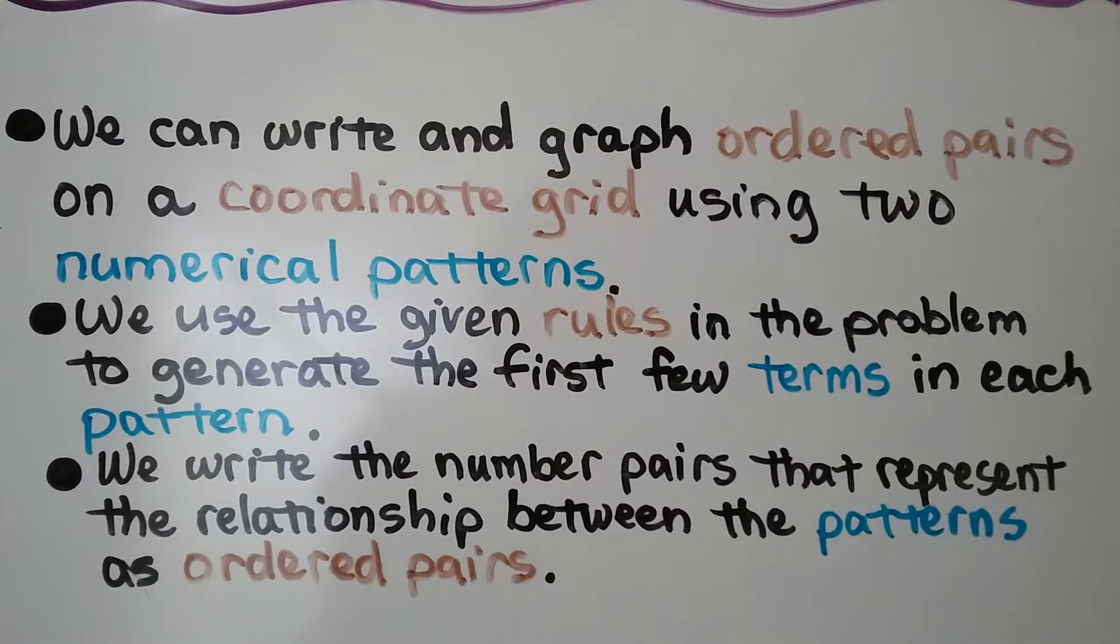We can write and graph ordered pairs on a coordinate grid using two numerical patterns. We use the given rules in the problem to generate the first few terms in each pattern. We write the number pairs that represent the relationship between the patterns as ordered pairs.